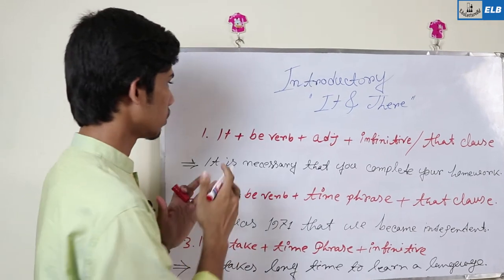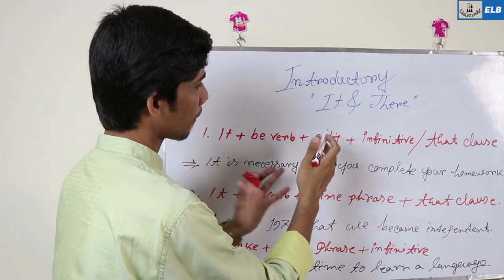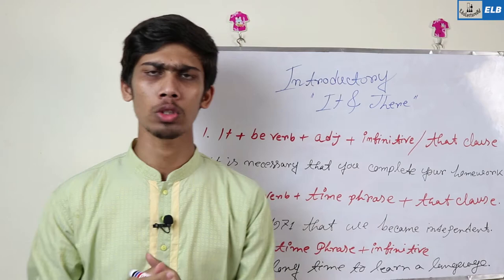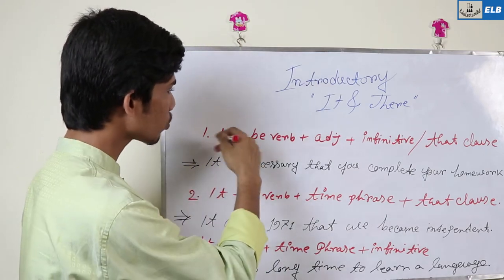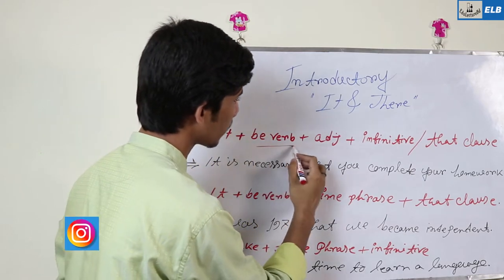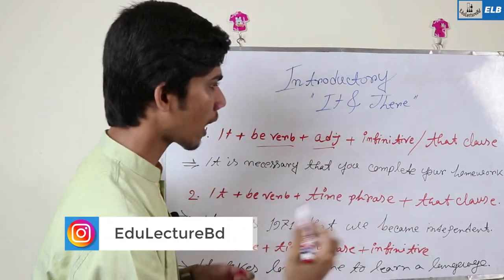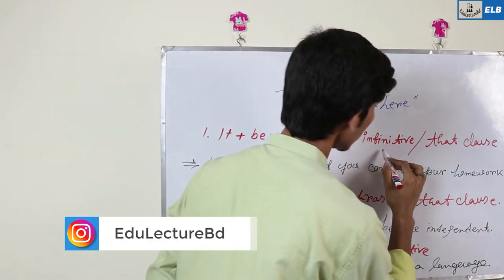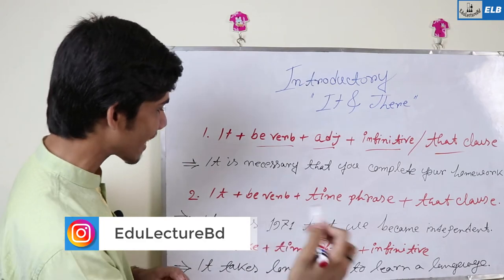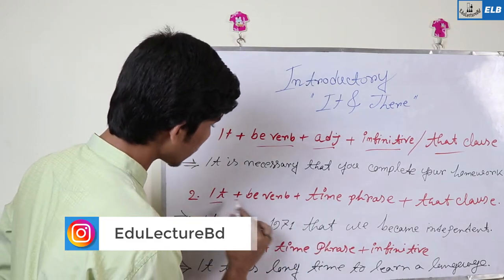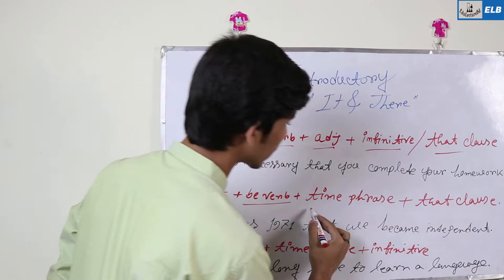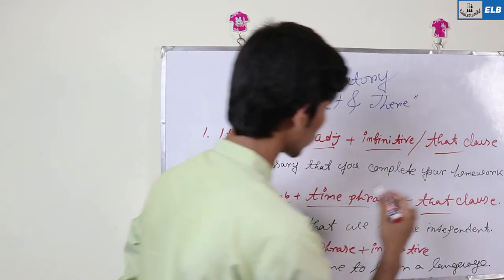The formula is: it + be-verb + adjective + infinitive or that clause. When you start a sentence this way, you must have a be-verb, then an adjective, then an infinitive or a that clause.